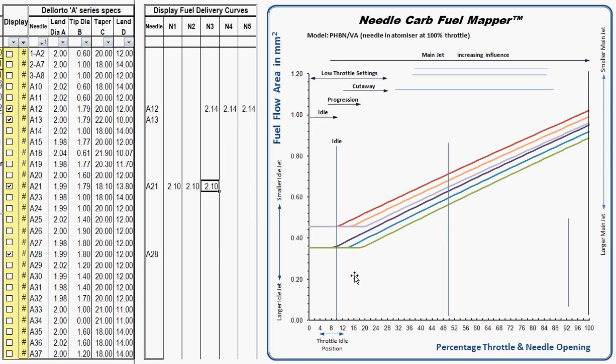Once we've got one that's close from the atomizers and the needles, we would find one that's pretty close. The question then is going to be whether or not we're getting too much fuel here and not enough at the top, or too little fuel down here and too much at the top. So what we would do is we would change once we've got close and we knew where we were working.